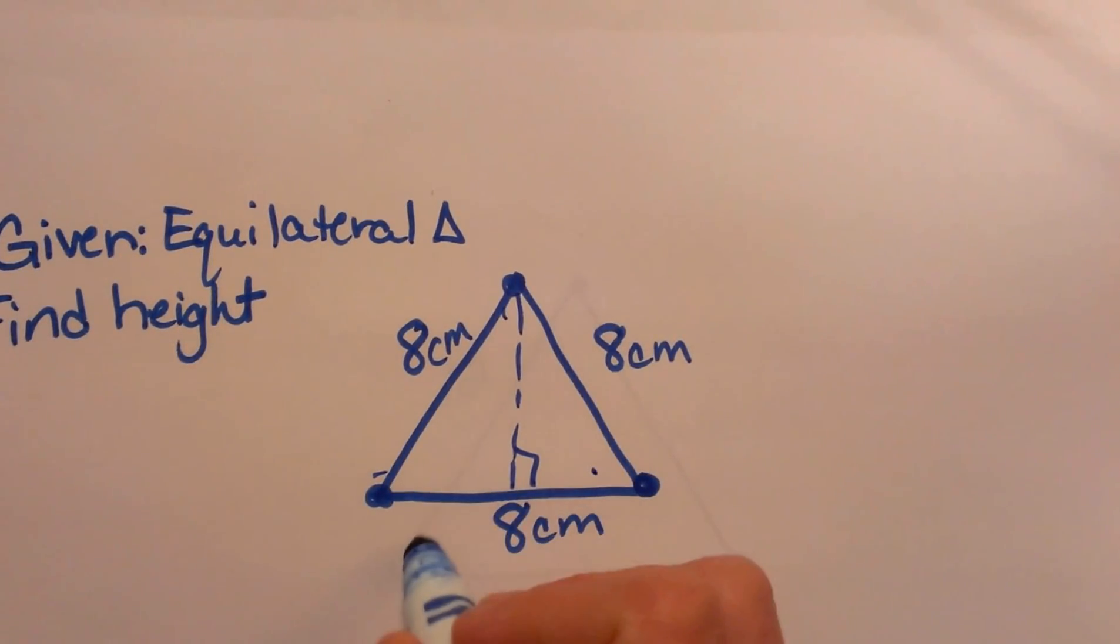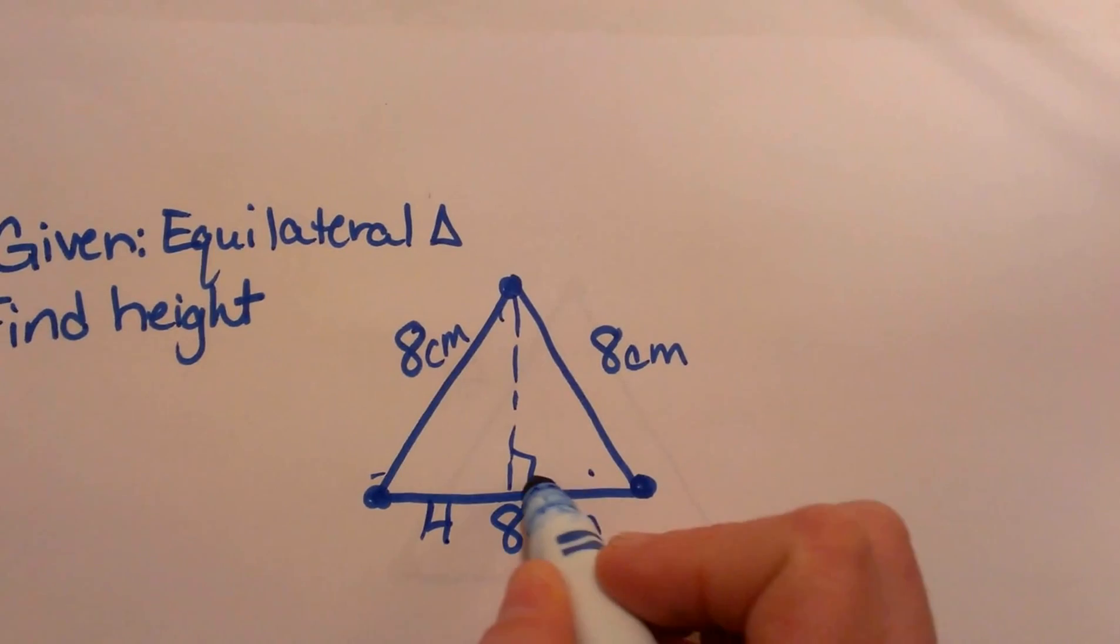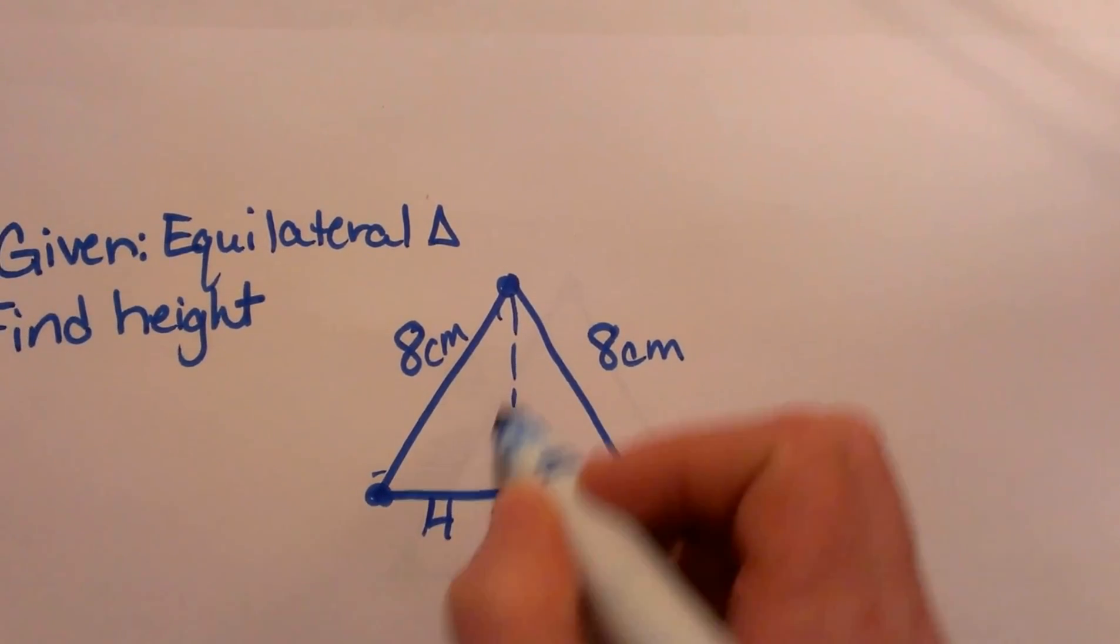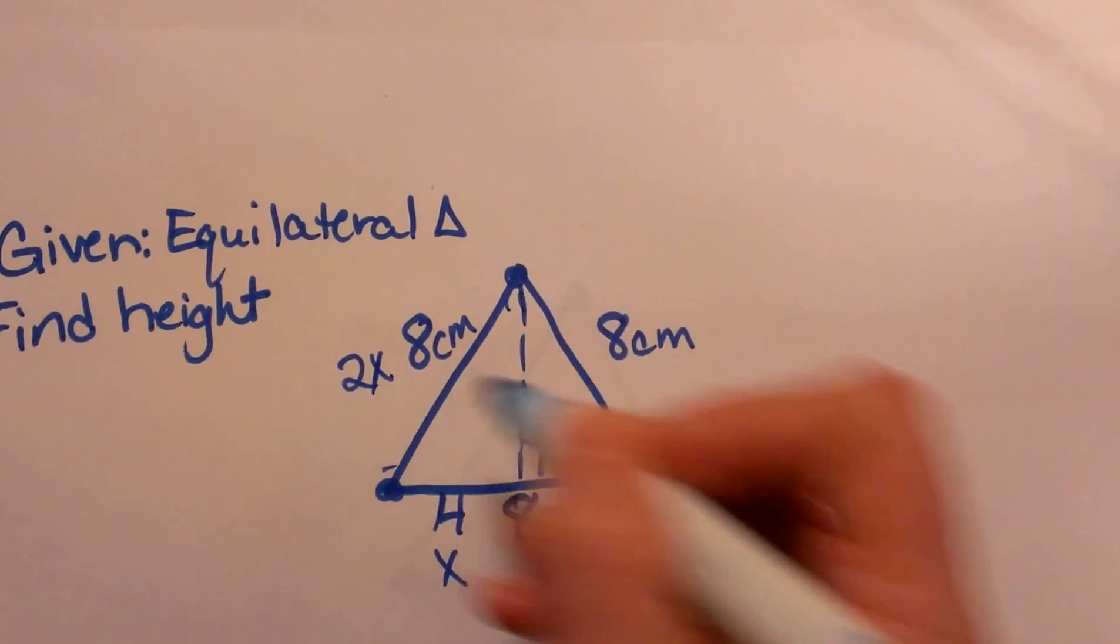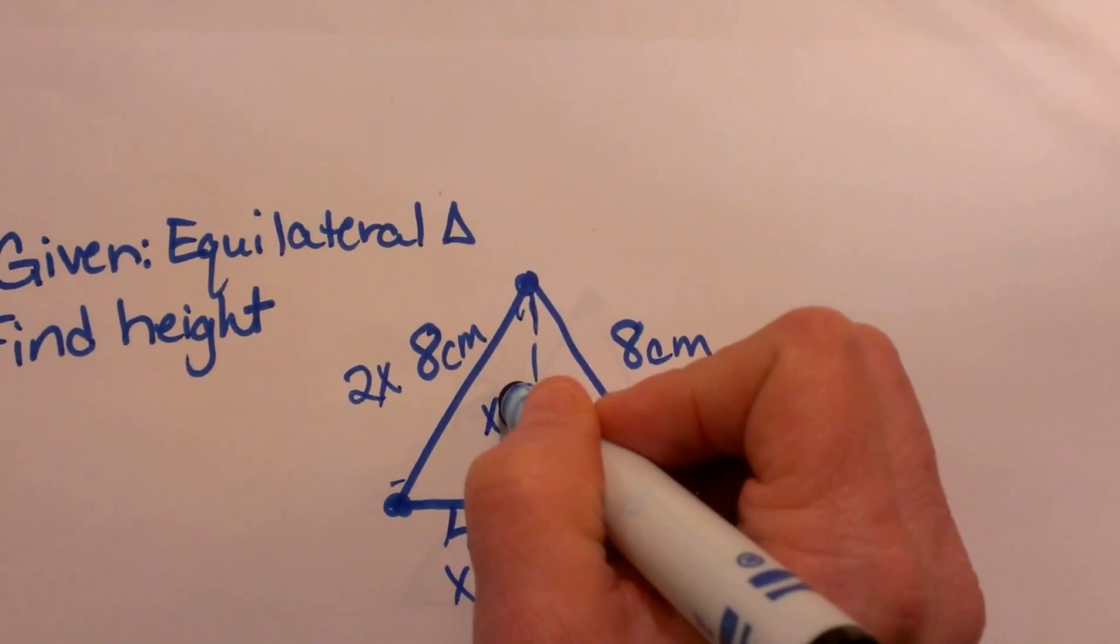What is it going to do to this base? It is going to cut it in half, 4 and 4, and then I take my x and my 2x and my formula for the long leg is x root 3.